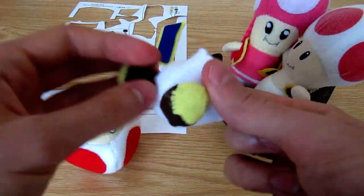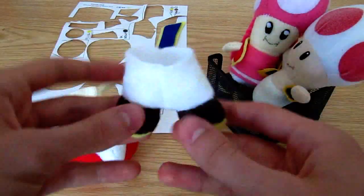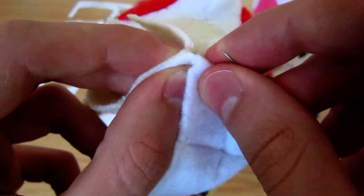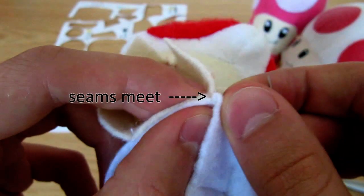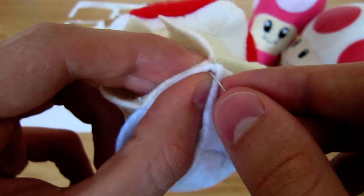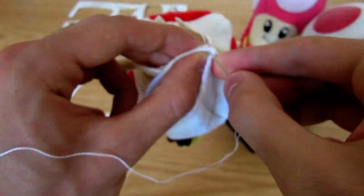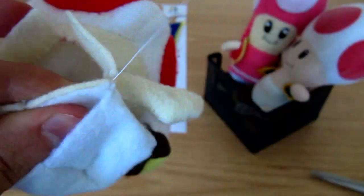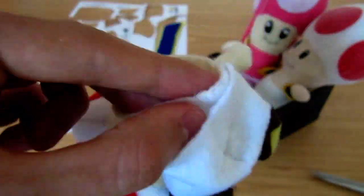Then turn the lower body the right way out and attach it to the upper body at the sides, so that the seams here meet. You can also attach it at the front if you want, like I did, but you don't need to. Then go around the front edge with blanket stitches.